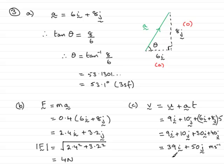It doesn't ask us to find the speed. If it did, we would need to do the square root of 39 squared plus 50 squared. But as I say, it doesn't ask the speed, just velocity here. So that is the end of the question.